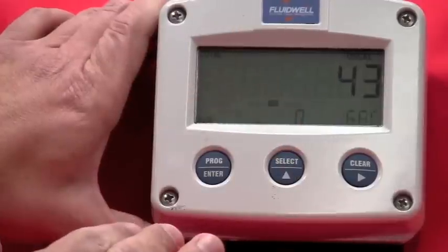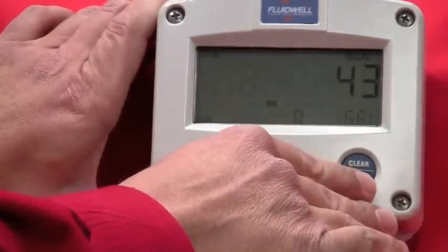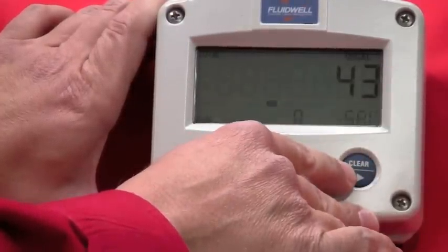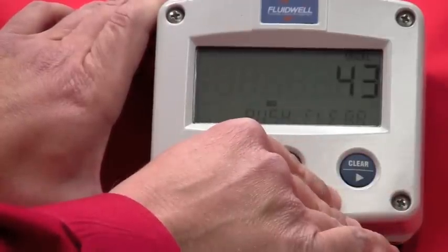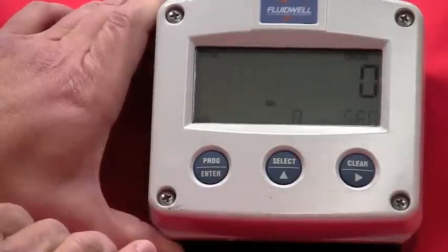To reset your totalizer while you're in the run mode, it's just push and release. I'm going to double-click the clear button, so I'll hit it once. It'll ask me to push clear to reset. If I hit it again, you'll see my total went back to zero.